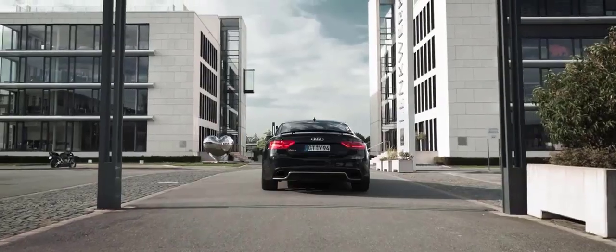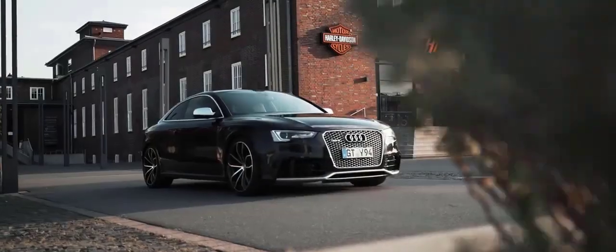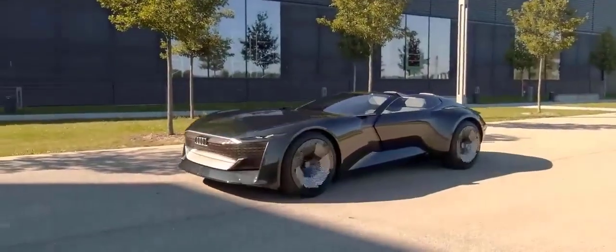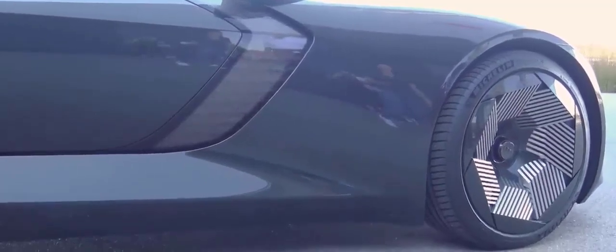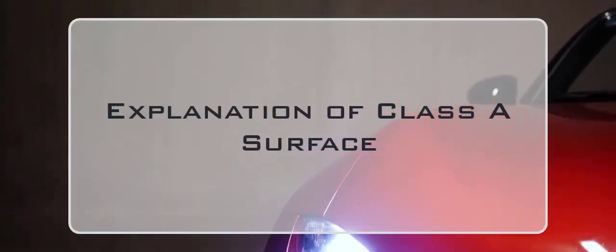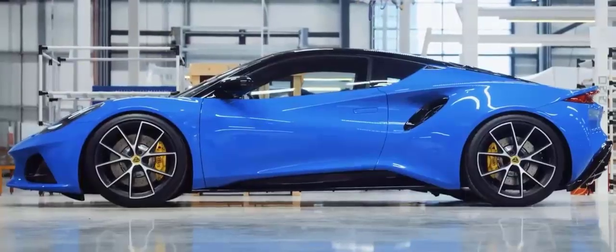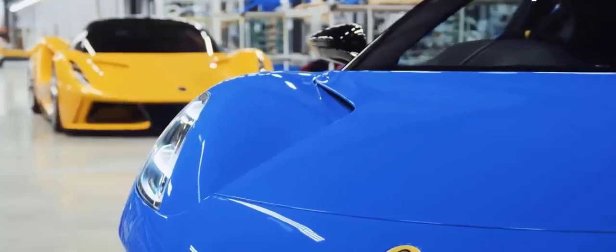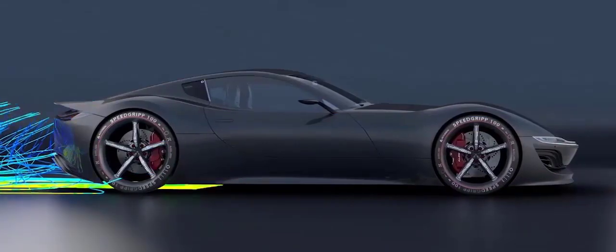Welcome to our video on glassy surfaces in the automotive industry. You may have heard the term glassy surface before, but what exactly are they and why are they important in the automotive industry? In this video, we will answer those questions and more. In simple terms, glassy surfaces are the highest quality and most visually appealing surfaces found on a car's exterior. They are smooth, curvaceous surfaces that make a car look sleek and aerodynamic.